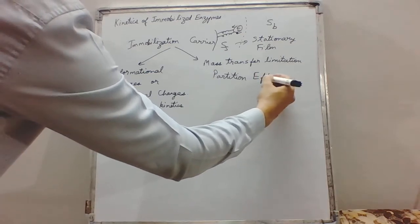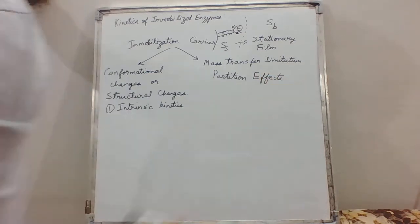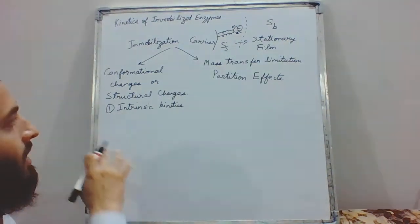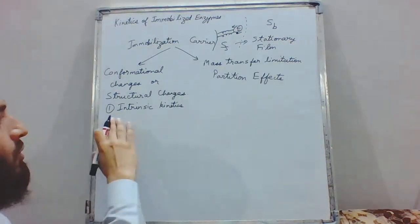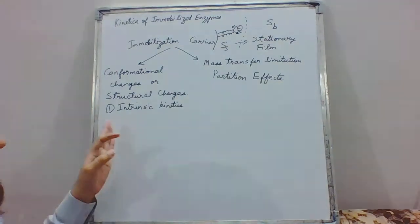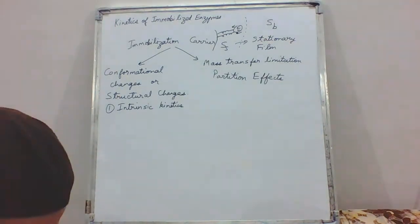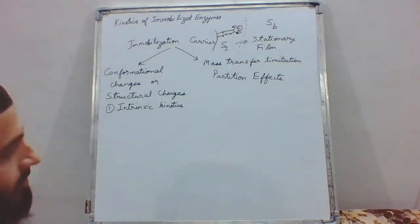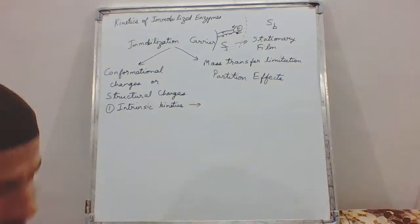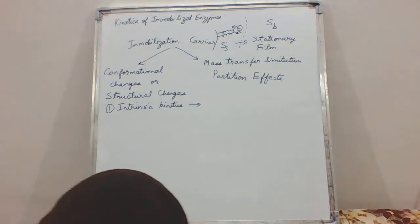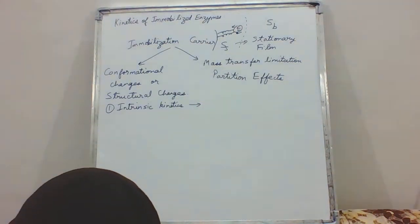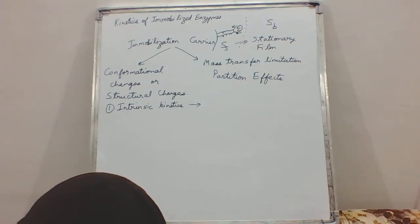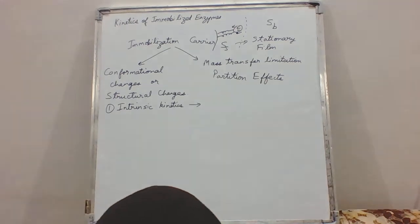Coming back to the types of kinetics: the first is intrinsic kinetics. Intrinsic kinetics is the kinetics of the immobilized enzyme in the absence of partition and mass transfer limitations.